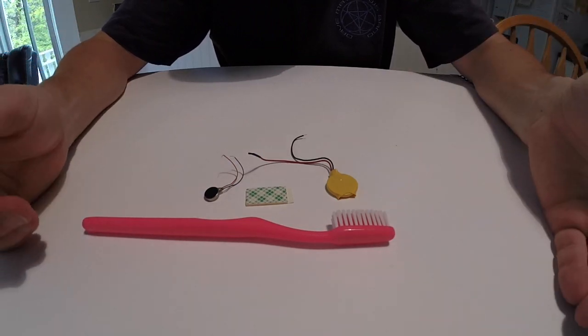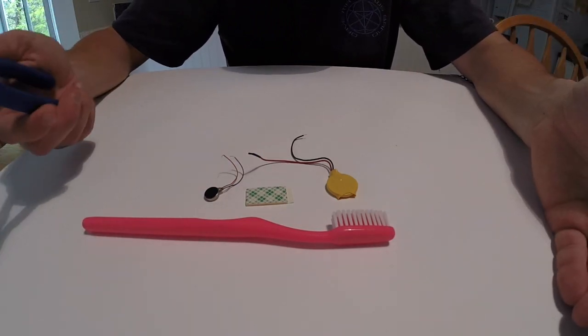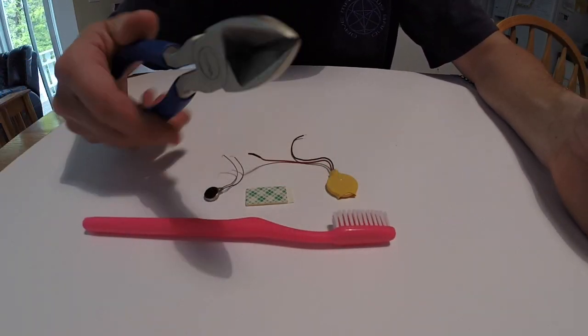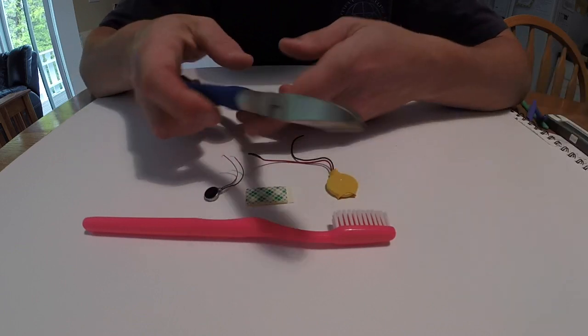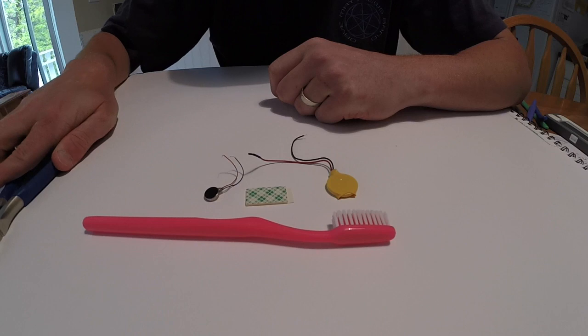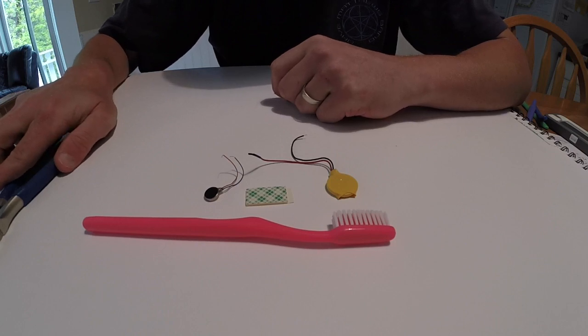So a strong pair of scissors or in this case I'm just going to use a little pair of snippers here that I already own. Those are the materials that you need to develop the brush bot. Let's get on to how we build the brush bot.